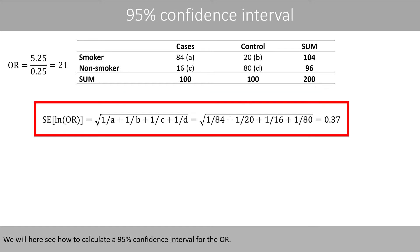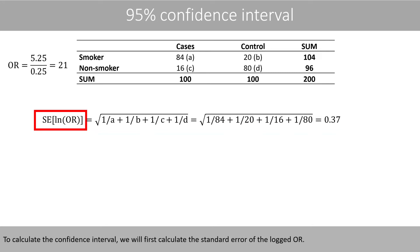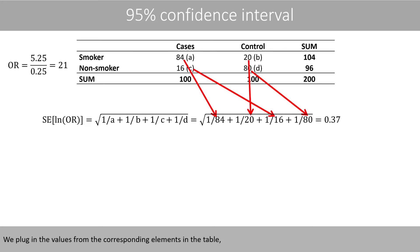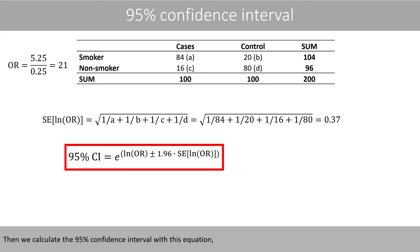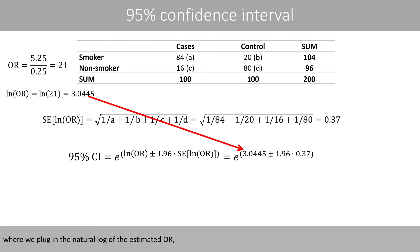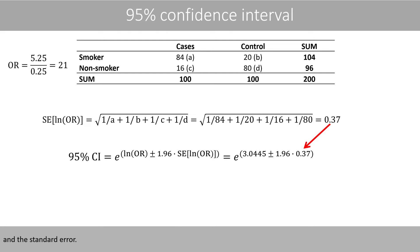We will here see how to calculate a 95% confidence interval for the odds ratio. To calculate the confidence interval, we will first calculate the standard error of the logged odds ratio. We plug in the values from the corresponding elements in the table and do the math. Then, we calculate the 95% confidence interval with this equation, where we plug in the natural log of the estimated odds ratio and the standard error.